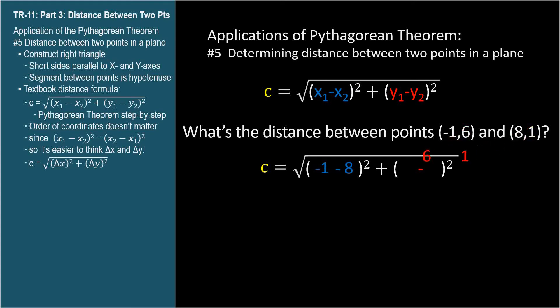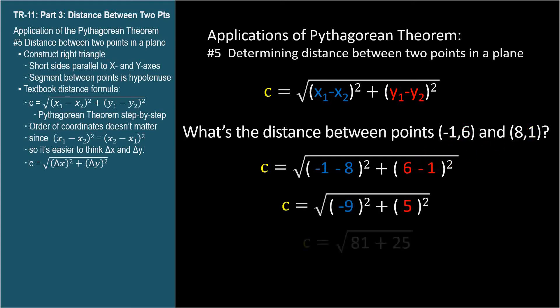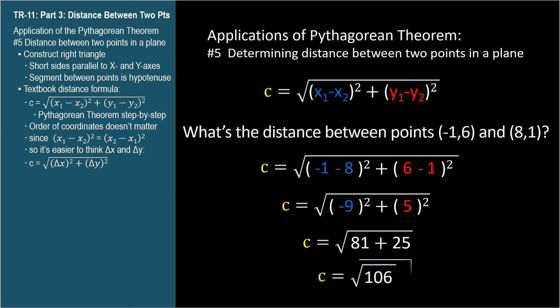Perform the subtractions, square these differences, add them together, and take the square root to find the distance.